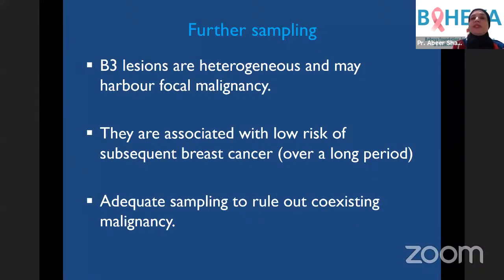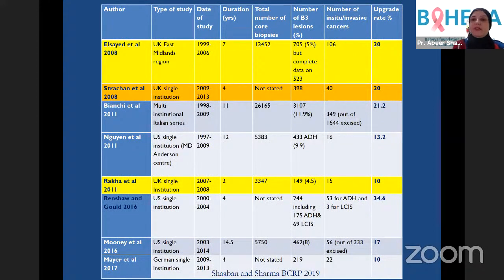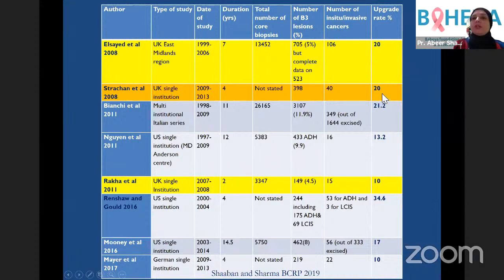By definition, we sample B3 lesions to make sure they are not associated with cancer. They carry a low risk of subsequent breast cancer development, usually occurring over a long period into ER-positive cancer. It is important to adequately sample them to rule out coexisting malignancy. Traditionally this was done by diagnostic surgical excision. The key parameter is the upgrade rate — the possibility of finding in-situ or invasive carcinoma if the lesion is further sampled. The upgrade rate is generally between 10 to over 20 percent across all B3 lesions.